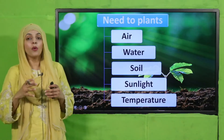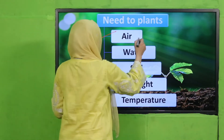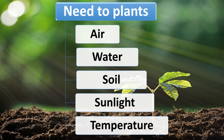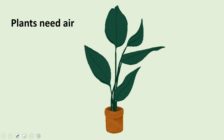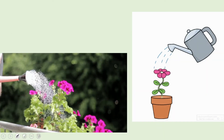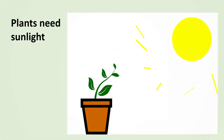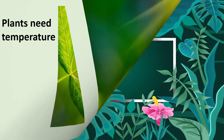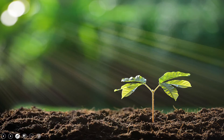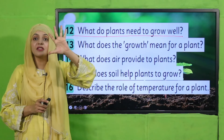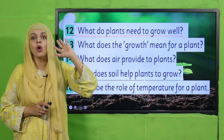My dear students, so what do plants need? Plants need air, and from air they take carbon dioxide, water, soil, sunlight and temperature. Here you can see a plant — isko chahiye paani, soil, sunlight and proper temperature to grow well. These five things are very important for the plant to grow well.